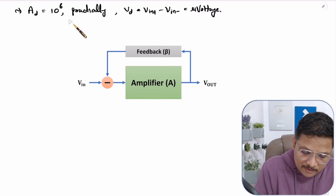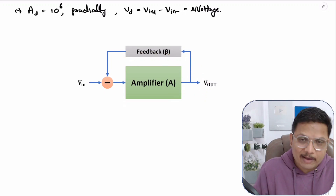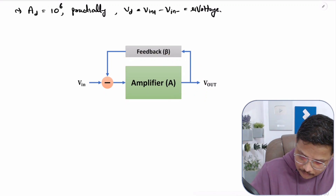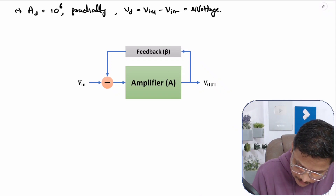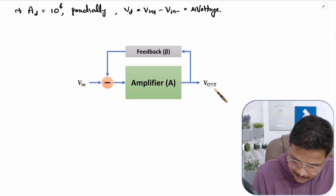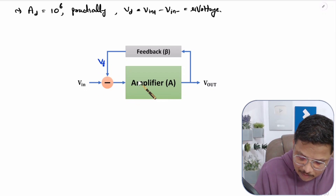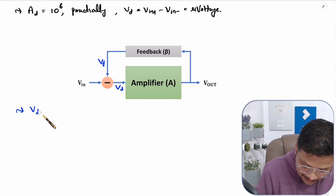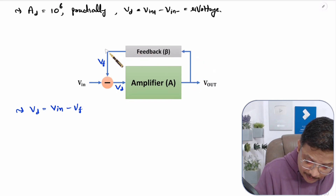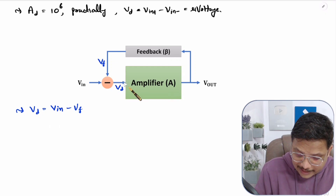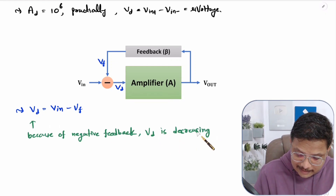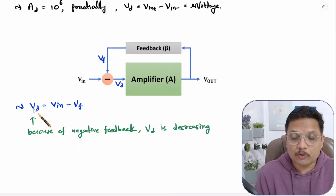So how to achieve the virtual short concept practically? What we will be doing is we will be providing negative feedback. I have already explained what negative feedback is in my last video. By having negative feedback, V out is fed back to the input. Here we have a feedback voltage V F, and now with this amplifier the differential input V D becomes V in minus V F. Because of negative feedback, this differential voltage is decreasing and approaching towards zero.